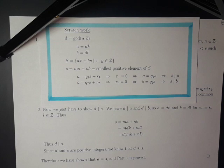Since d and s are positive integers, we know that d is less than or equal to s. Therefore, we have shown that d equals s, and part 1 of Bezout's lemma is proved.